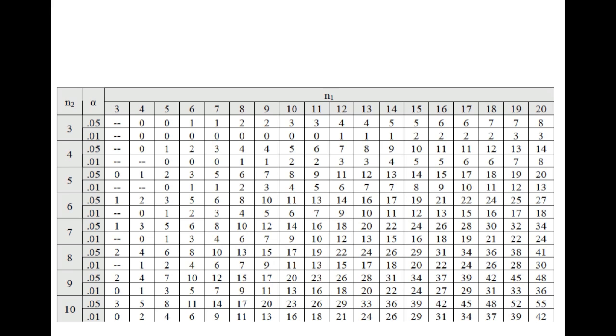So here is part of the U distribution table that we'll use to estimate our P value. We first need to identify our sample sizes noted on the table here as N1 and N2. For our data subset that we use, we had four salespeople and three managers. So that will be our N1 and N2. We find our critical U value in the table by finding where those two sample sizes meet in the table. So right here. And our critical U value is zero.